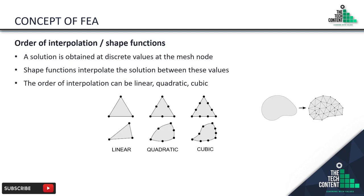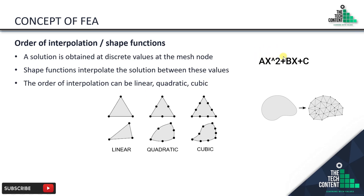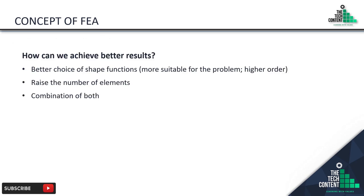Order of interpolation or shape functions: we obtain results at nodes only and then interpolate for the entire domain. The order of interpolation can be linear, quadratic, or cubic. For linear, the equation is ax + b; for quadratic, ax² + bx + c; and for cubic, ax³ + bx² + cx + d. To achieve better results we can use higher-order shape functions, increase the number of elements, or combine both approaches.